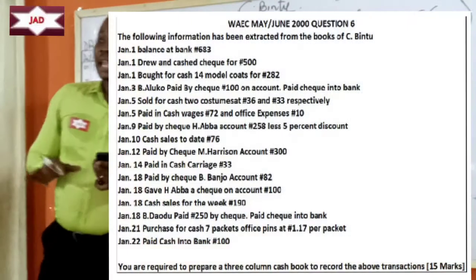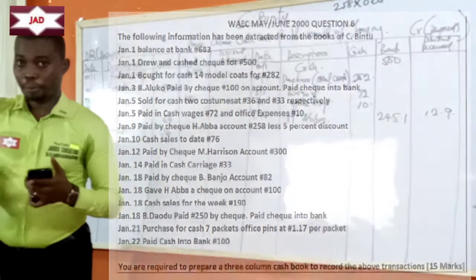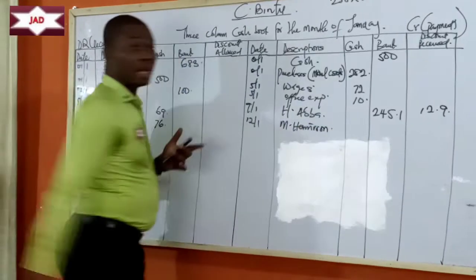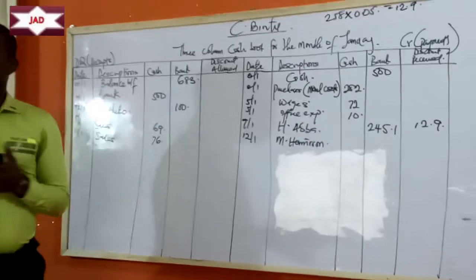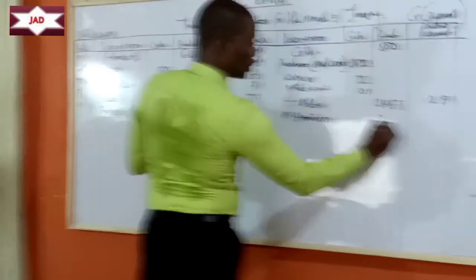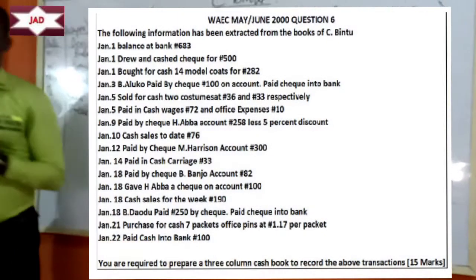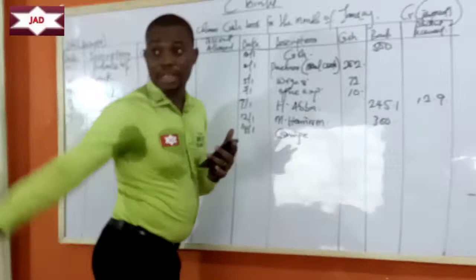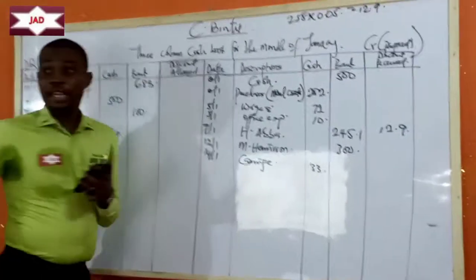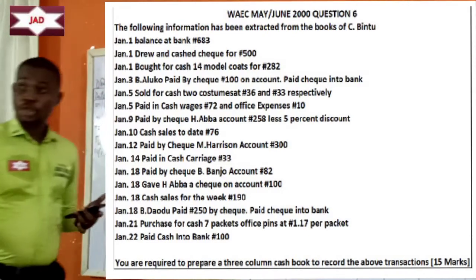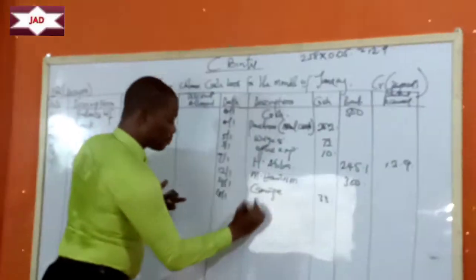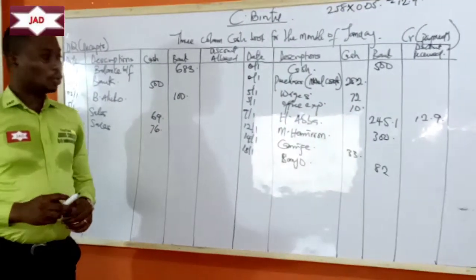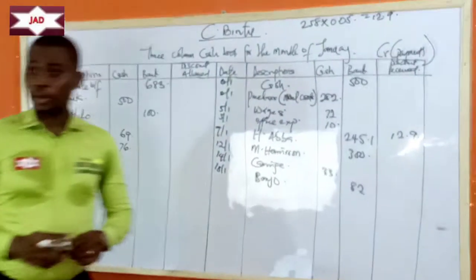January 12th, paid by check, M. Harrison's account 300 Naira. When you pay by check, that's a payment. We record January 12th, M. Harrison, in the bank column for 300 Naira. January 14th, paid in cash, carriage 33 Naira — that's a payment. We record January 14th, carriage, in the cash column for 33 Naira. Next, 18th January, paid by check B. Banjo's account 82 Naira. We record January 18th, Banjo, in the bank column for 82 Naira.